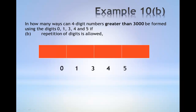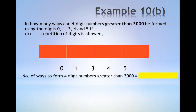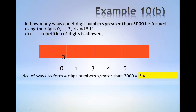Again we consider the 5 digits and the 4 different slots. The number of ways to form 4-digit numbers greater than 3000: for the first slot it can be any of the 3 digits 3, 4 or 5 — for example, 3. The second slot can be any of the 5 digits: 0, 1, 3, 4 or 5 — for example, 4. Similarly, the third digit can be any of the 5 digits — for example, 1 — and the last digit any of the 5 — for example, 0.